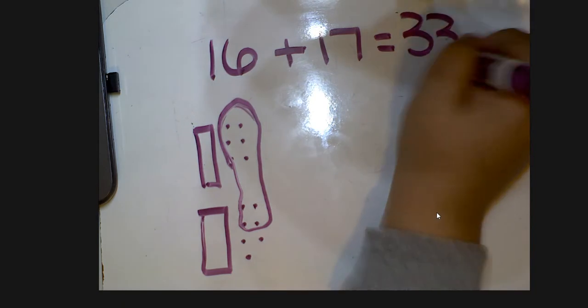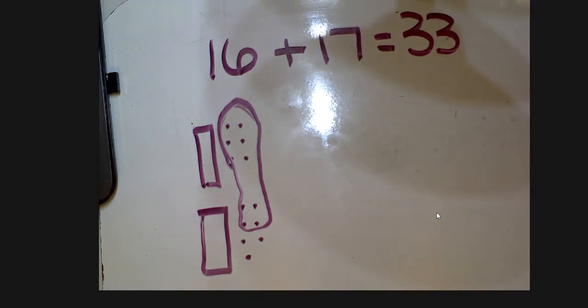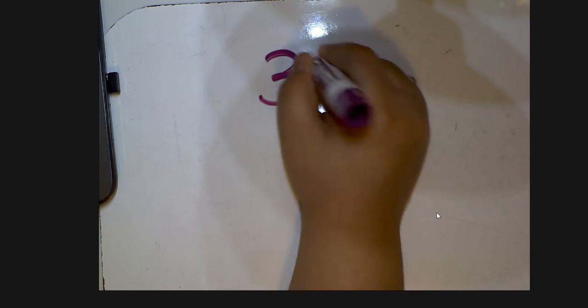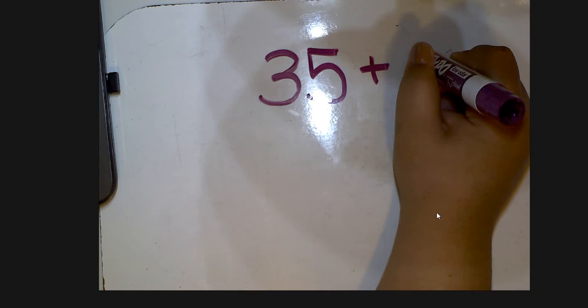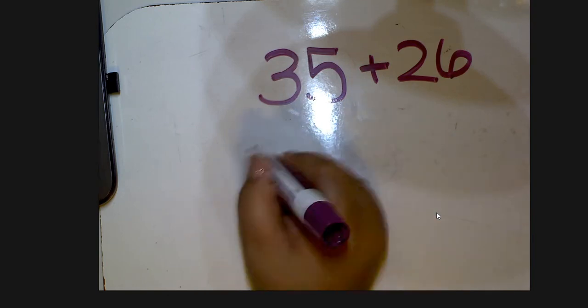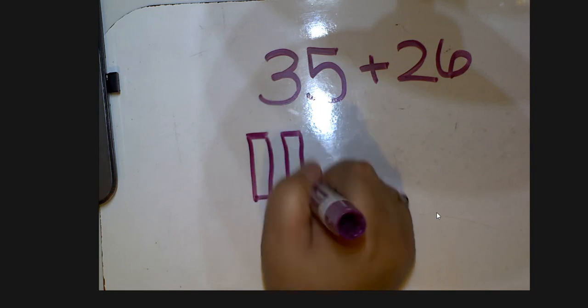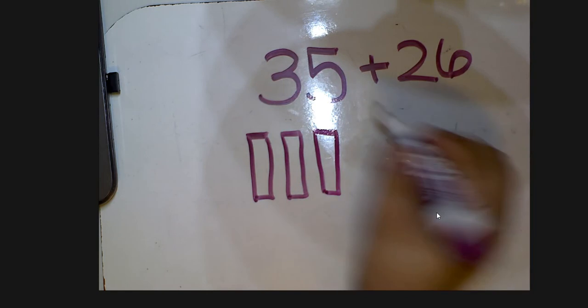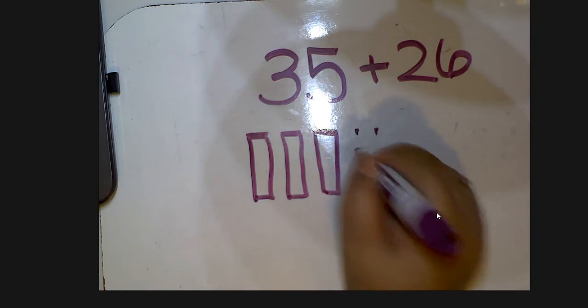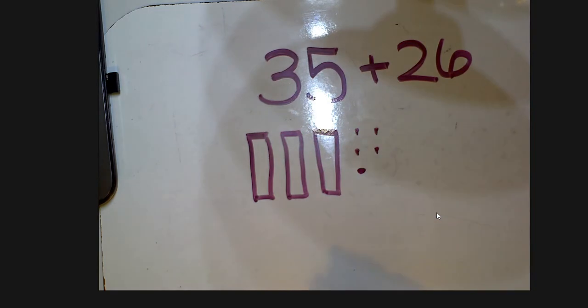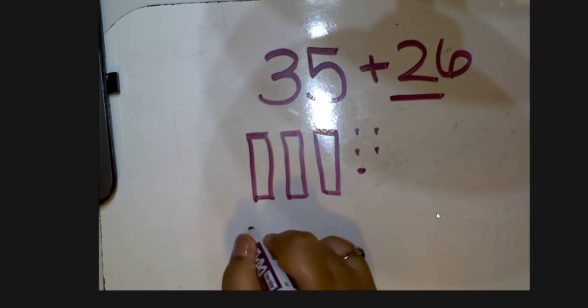Okay, let's try a harder one — I'm going to kick it up a notch. We're gonna do 35 plus 26. We can do this — we're just going to draw a picture. We'll do 35 first: three tens, and five ones — one, two, three, four, five. Then 26: two tens — one, two — and six ones — one, two, three, four, five, six. Okay, we've modeled both of our numbers.